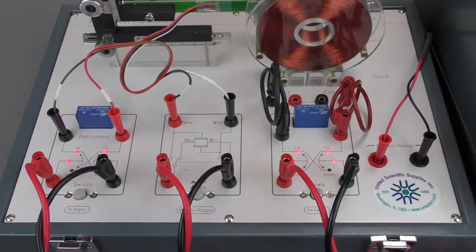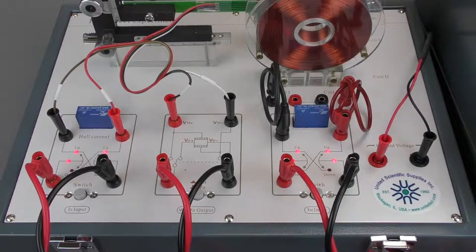The system allows you to investigate and eliminate systematic errors. These include the Unequal Potential effect, the Ettingshausen effect, the Nernst effect, and the Righi-Leduc effect. Of these, only the Unequal Potential effect can be fully eliminated.